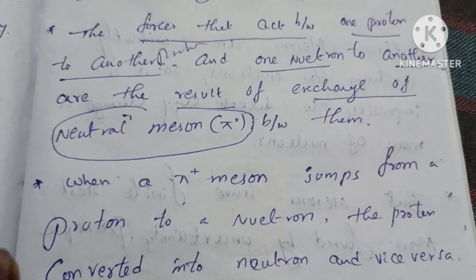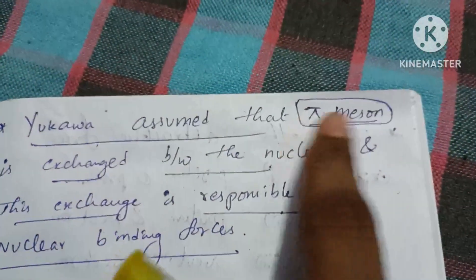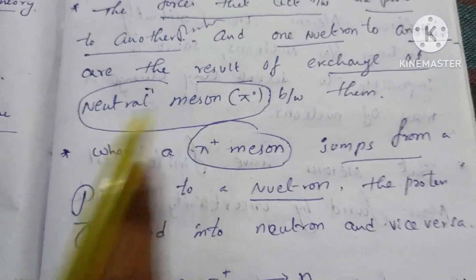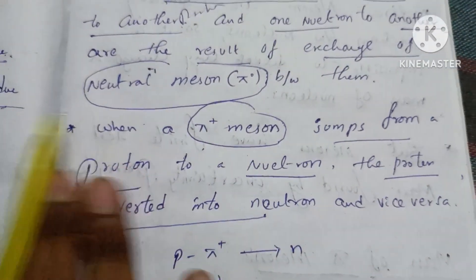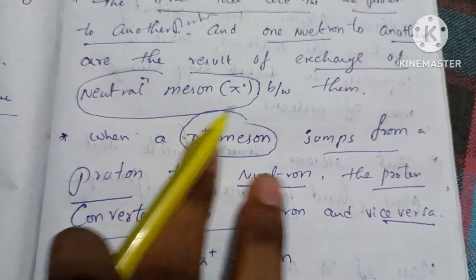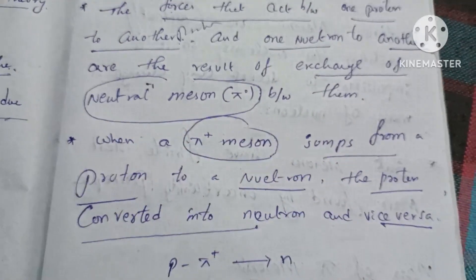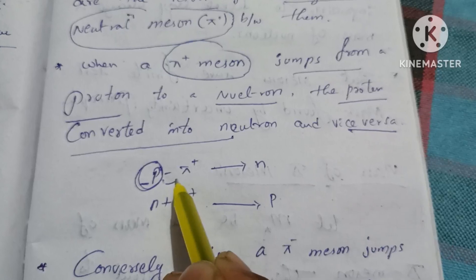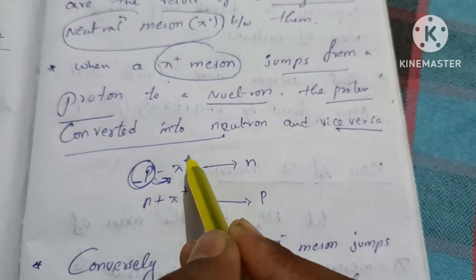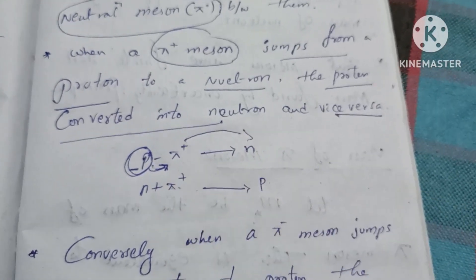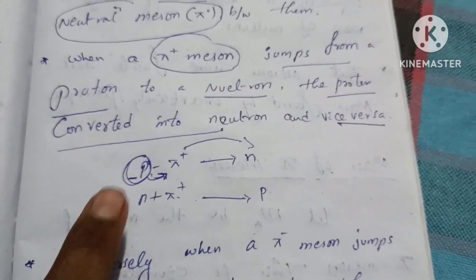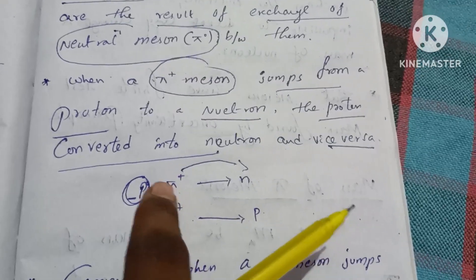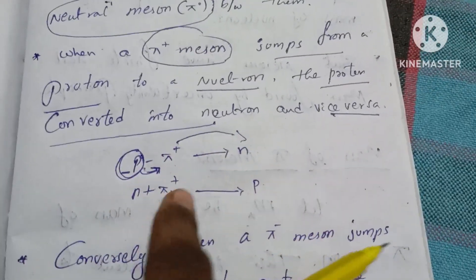When a pi-plus meson jumps from one proton to one neutron, the proton is converted into a neutron and vice versa. That is: p gives pi-plus to n, so p becomes n, and n plus pi-plus becomes p. This exchange is the pi-plus meson interaction.